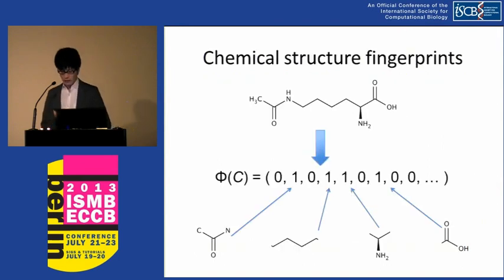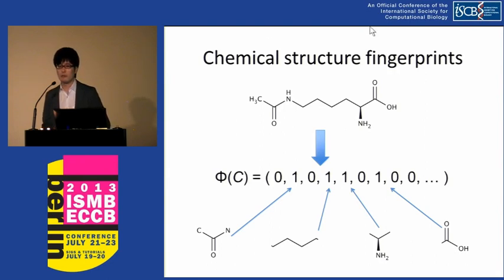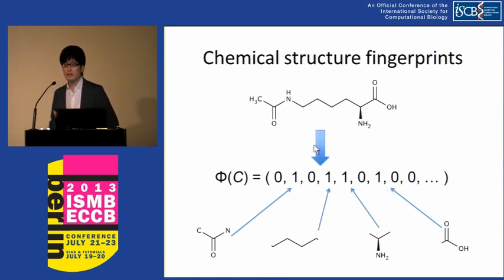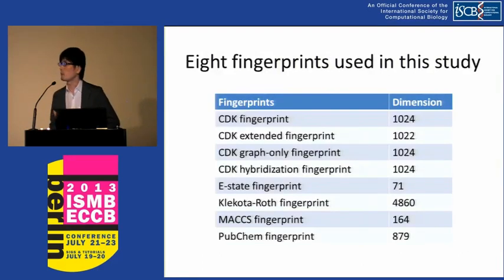The calculation is very tough. In previous work, we dealt with this problem using a graph theory-based method — the graph isomorphism problem. But in this study, for better calculation speed, we applied chemical structure fingerprints, where the presence or absence of chemical substructures in a molecule is represented as 0 or 1. We represent the chemical structure fingerprint as φ(c), and in this study I used eight fingerprints.